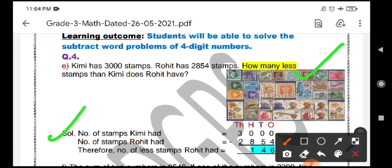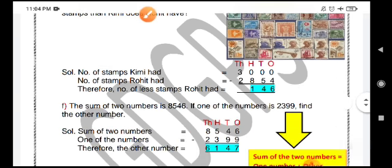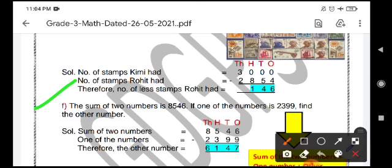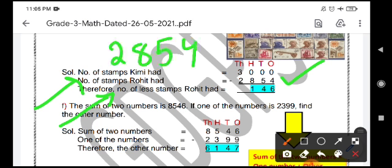Now third step is to write the statement. You will write solution. First, you will write number of stamps Kimi had and that is 3000. Next, number of stamps Rohit had and that is 2854. Therefore, number of less stamps Rohit had because Rohit is having less stamps. 2854 is the number of stamps Rohit is having and that is less than 3000. So Kimi has more stamps by how much? We will find out.